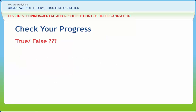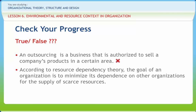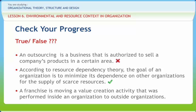Review questions: An outsourcing is a business that is authorized to sell a company's products in a certain area — right or wrong? Wrong. According to resource dependence theory, the goal of an organization is to minimize its dependence on other organizations for the supply of scarce resources — right or wrong? Right. A franchisee is moving a value creation activity that was performed inside an organization to outside organizations — right or wrong? Wrong.